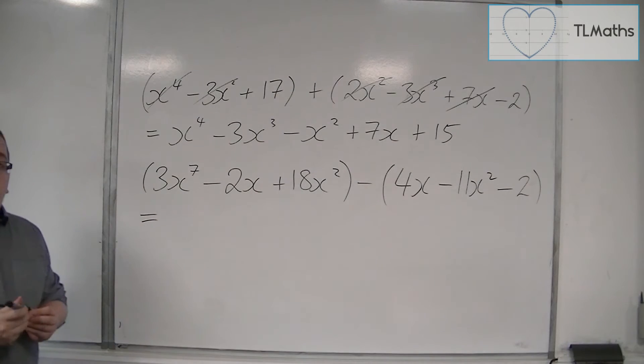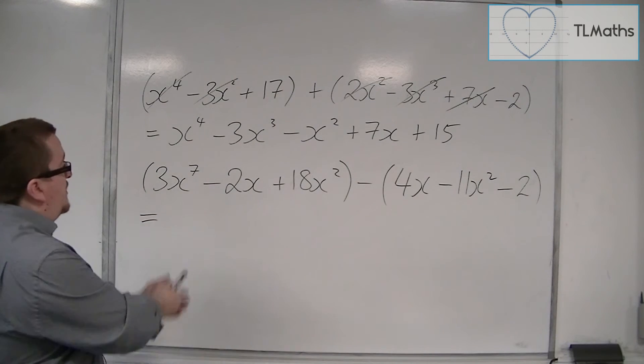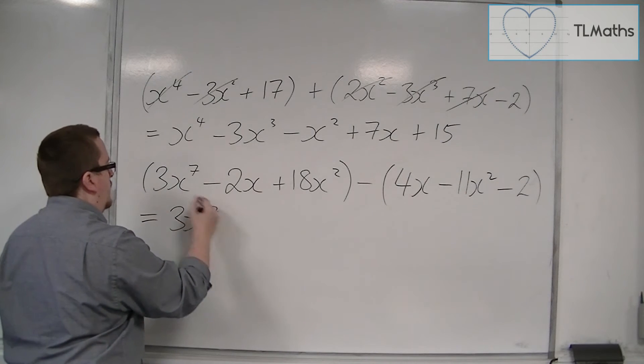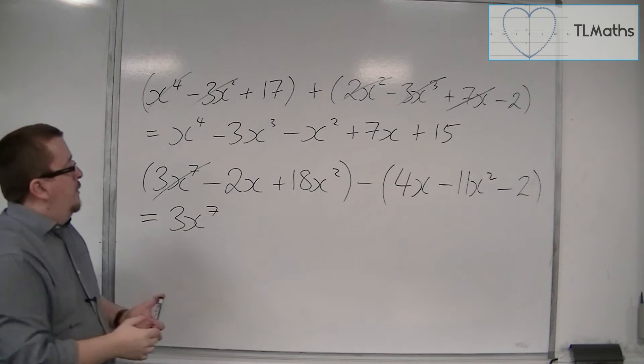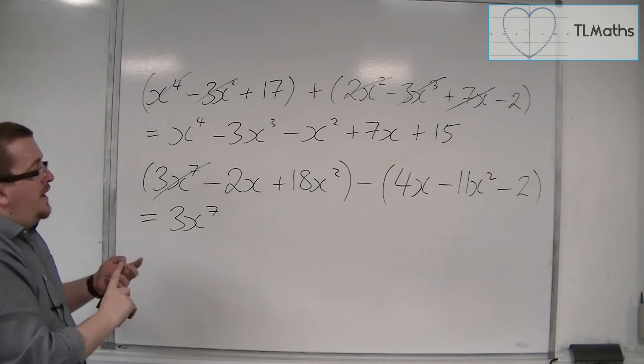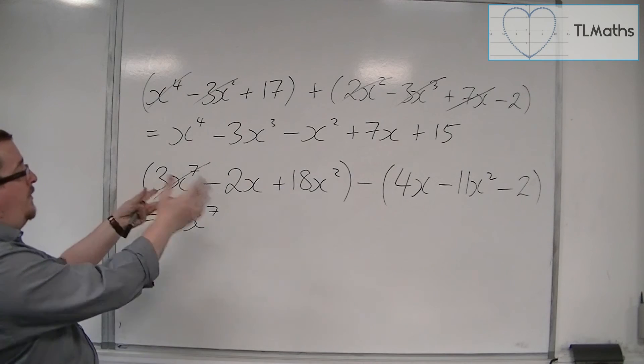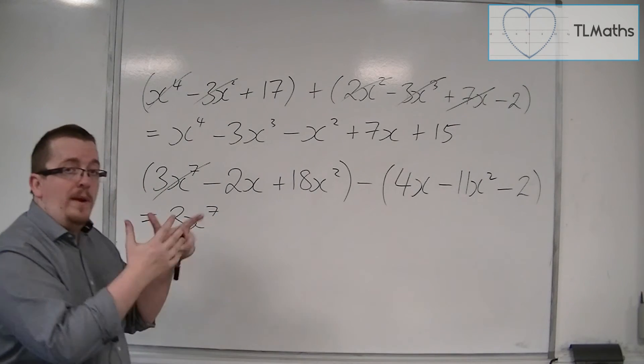So first of all, look for the highest power. So in this case, it's the 7, so 3x to the 7. Then we're going to look for 6s. There's no x to the 6, there's no x to the 5, there's no x to the 4, there's no x to the 3. So the next largest power is x to the 2, so x squareds.